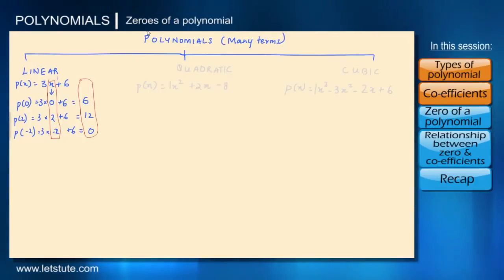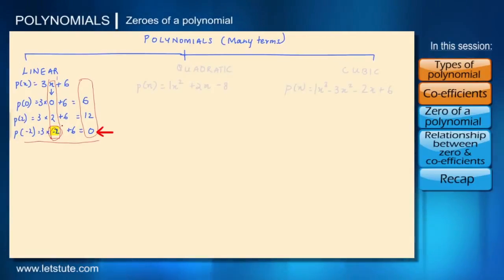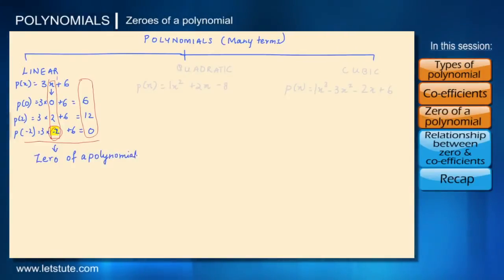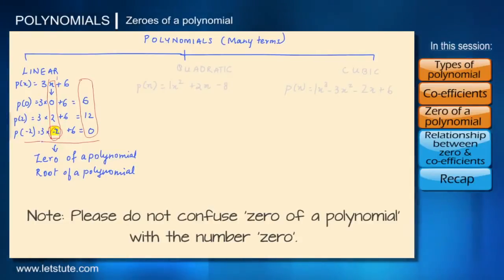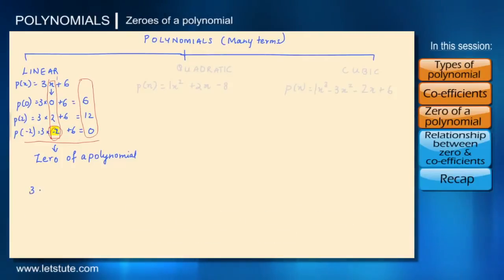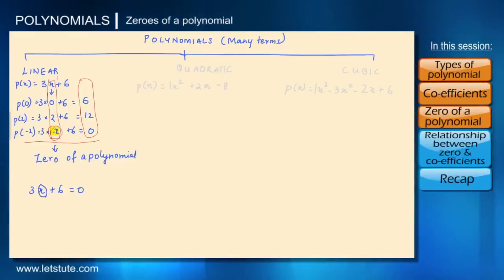When the polynomial is equal to 0, the value of x at that point, that is minus 2, is mathematically called the zero of a polynomial or root of a polynomial. So now we know that when we put the polynomial equal to 0 — let's say 3x plus 6 equal to 0 — we should be able to get the value of x as minus 2. It's just the reverse process.